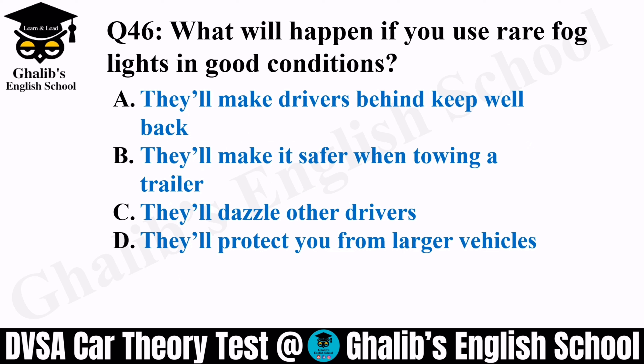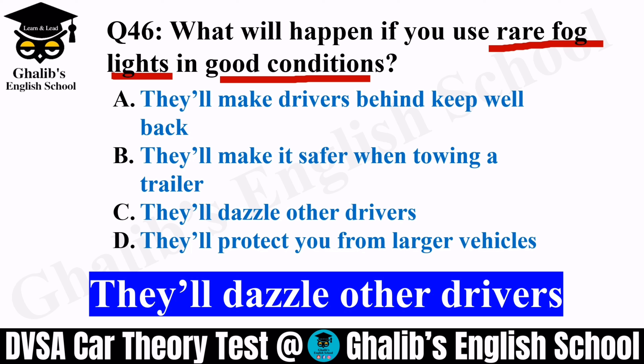Question 46. What will happen if you use rear fog lights in good visibility? Rear fog lights are your car's back fog lights. Options: they will make drivers behind keep well back, they will make it safer when towing a trailer, they will dazzle other road users, or they will protect you from larger vehicles. If you use rear fog lights in good visibility, they will dazzle other road users — that is a potential hazard, so don't do it.